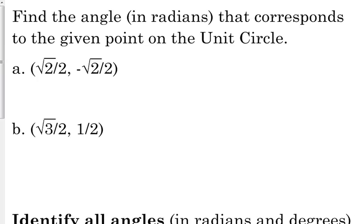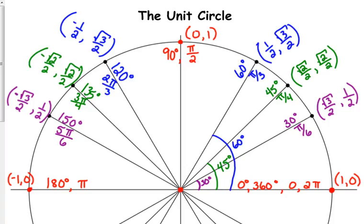Flip your paper over, and let's try and answer this question. This says find the angle in radians that corresponds to the given point on the unit circle. So, this time we're looking for the angle. Here's the point. We want the angle. So, we want to find the angle where the x value is the positive square root of 2 over 2, and the y value is the negative square root of 2 over 2.